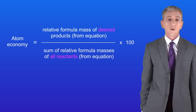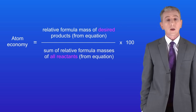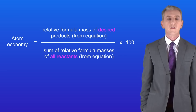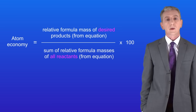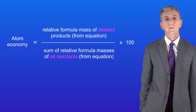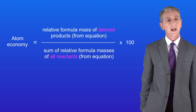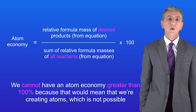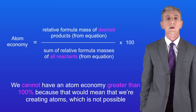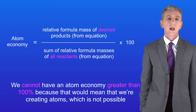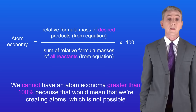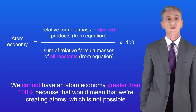There are a few points about this. Firstly, what's meant by 'from the equation'? This means that big numbers count, and you'll see what that means later. Secondly, the question will tell you the desired product. And lastly, we cannot have an atom economy greater than 100%, because that would mean we're creating atoms, and that's not possible.